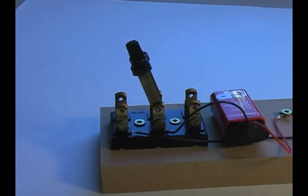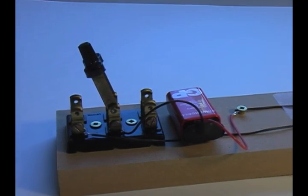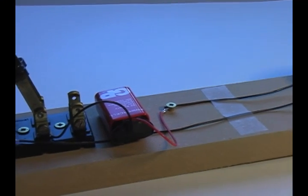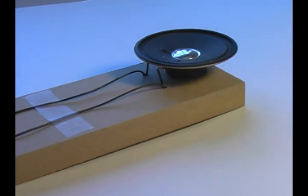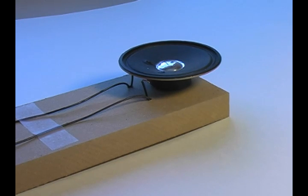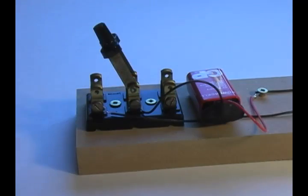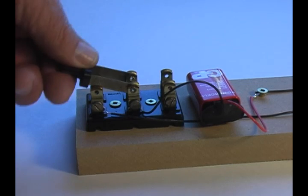Samuel Morris proposed a code of dots and dashes, short and long pulses of electricity to represent letters and numbers. This, of course, is Morris code. The dots and dashes were detected at the receiving end, either as an audible signal or as marks on a paper tape.